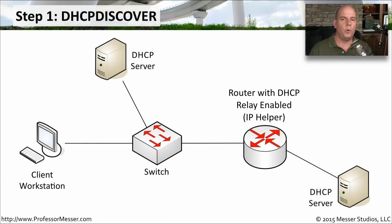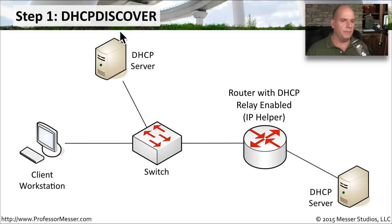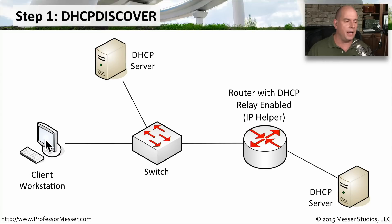There are four main steps to getting a DHCP IP address on your device. Step one is called DHCP Discover. This is a discovery process done by our client station, which does not have an IP address. It's connected to a switch, and on the subnet is a DHCP server.